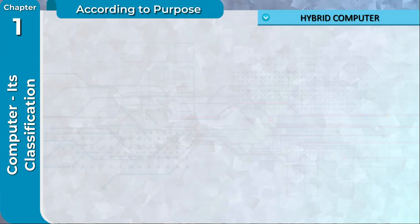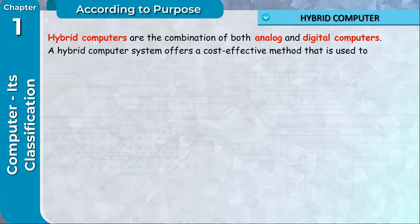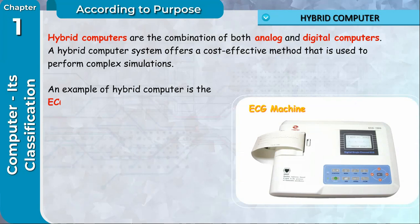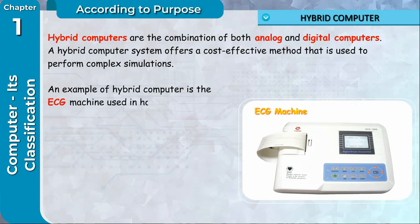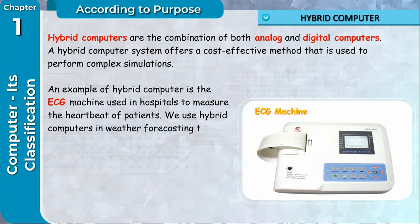Hybrid Computer: Hybrid computers are the combination of both analog and digital computers. A hybrid computer system offers a cost-effective method that is used to perform complex simulations. An example of hybrid computer is the ECG machine used in hospitals to measure the heartbeat of patients. We use hybrid computers in weather forecasting too.